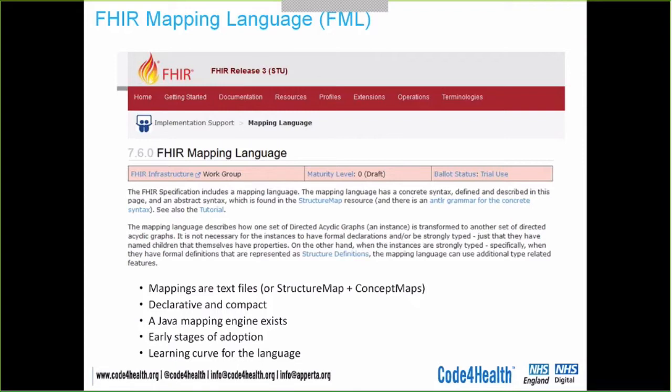However, FHIR mapping language is at an early stage of adoption — maturity level 2. And there is a learning curve: it's unfamiliar and different. You have to learn it before you can start using it. Those are the inhibitors to using FHIR mapping language. It is in principle a faster way of developing transforms, and it's a standard way — it's part of the FHIR standard, which is a big advantage. But it's at a very early stage of adoption and not many people know what it's about.